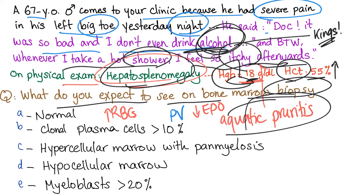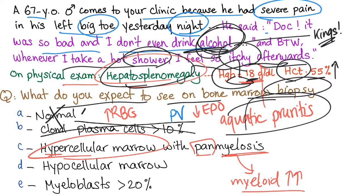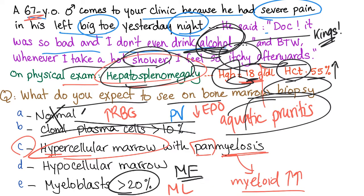Let's answer the bone marrow question. Normal? No — it's working like crazy. Clonal plasma cells more than 10%? That's multiple myeloma. Hypercellular marrow with panmyelosis — yes, correct. Hypercellular because every cell line is increased; panmyelosis means extended myeloid cell proliferation. Hypocellular marrow points to marrow fibrosis or aplastic anemia. Myeloblasts greater than 20% suggests myeloid leukemia. The correct answer is C — hypercellular marrow with panmyelosis.